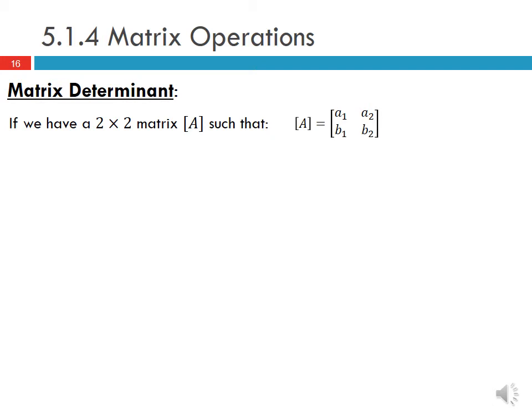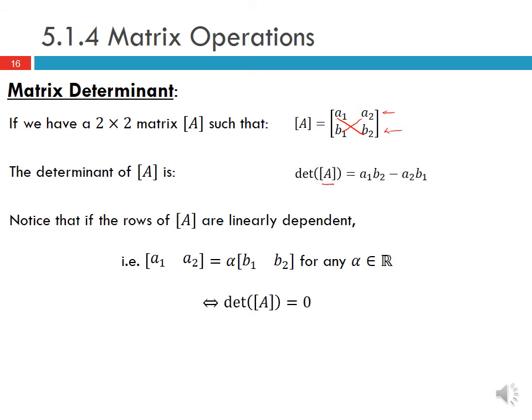For a 2 by 2 matrix A with rows [A1, A2] and [B1, B2], the determinant is A1·B2 minus A2·B1. If the rows of A are linearly dependent — meaning one row is a scalar multiple of the other — then the determinant equals zero. This relationship goes both ways: the determinant equals zero if and only if the rows of A are linearly dependent.